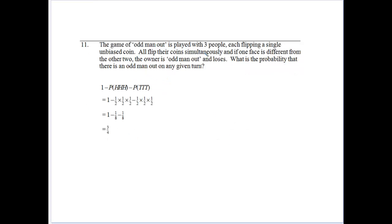So we've got a game of odd man out with three people. They toss an unbiased coin simultaneously. And if one face is different from the other two, the owner is the odd man out and loses. What's the probability there's an odd man out on any given turn? Well, really this game will be an odd man out if we don't get three heads or three tails.